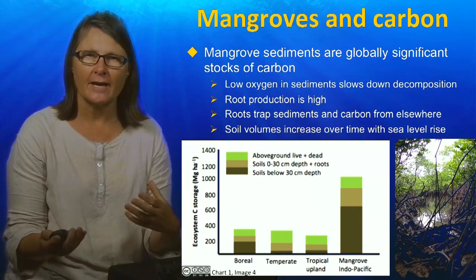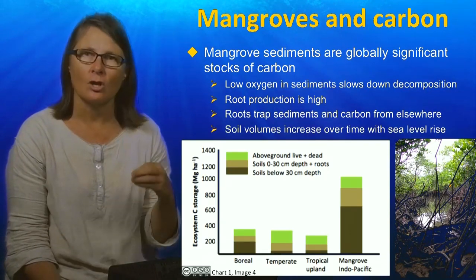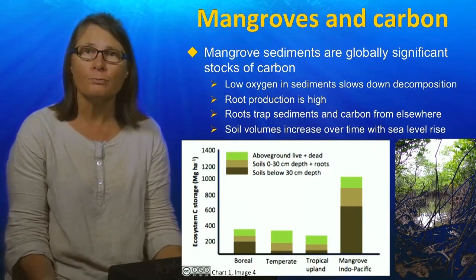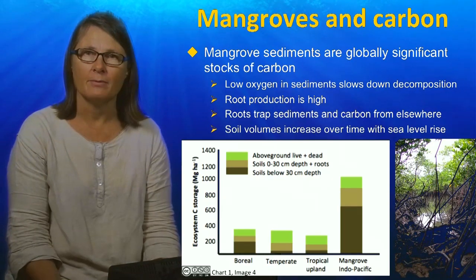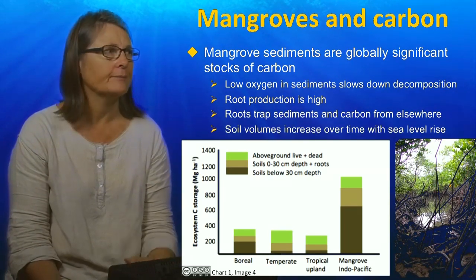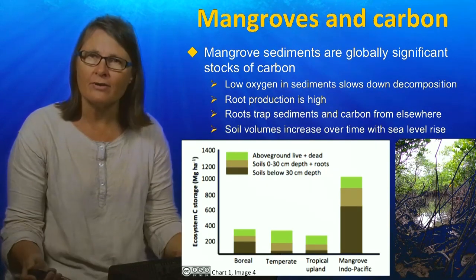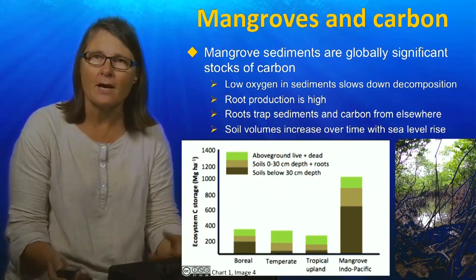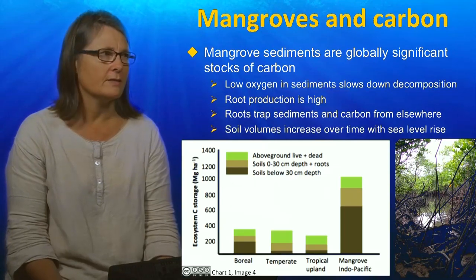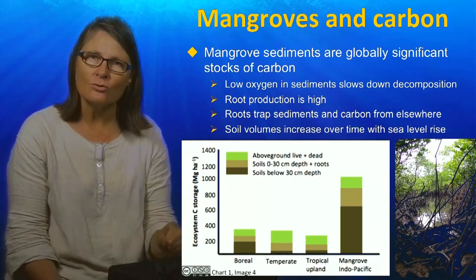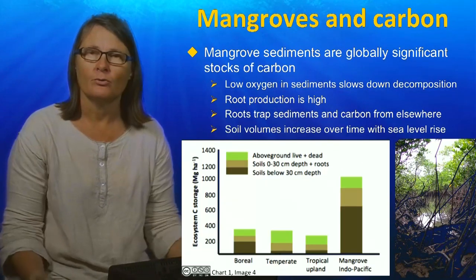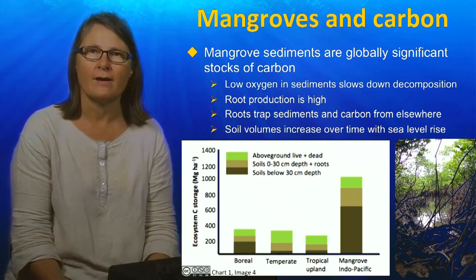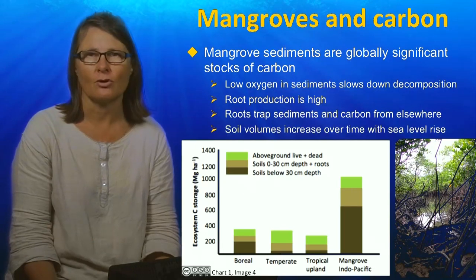This large carbon store arises because there is low oxygen in the sediments, which slows decomposition of organic matter. Root production — additions to that carbon stock — is very high. All of those above-ground roots trap sediments, trap leaf litter, and trap carbon, which gets incorporated into the soil volume. Soil volumes increase over time with added material from sediments accumulating on the surface and roots below ground, leading to an increase in carbon stock over time.